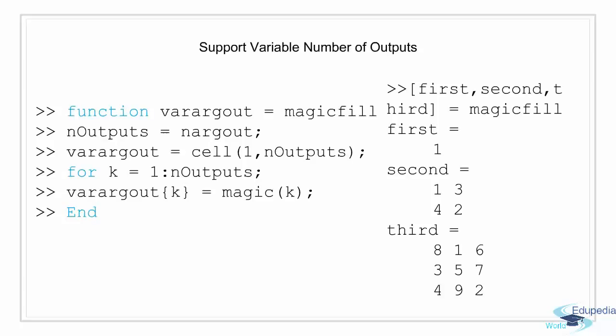Similar to having a variable number of inputs, we can define a function to return a variable number of output arguments using varargout. This is a cell array that contains the function outputs, where each output is in its own cell. The example shown here makes the function assign a magic square to each of the requested outputs. So if one output is requested, it outputs one one-dimensional magic square. If two outputs are requested, it outputs a one-dimensional and a two-dimensional magic square matrix, and so on. For three outputs, it will be a one-dimensional, a two-dimensional, and a three-dimensional square matrix. Using nArgOut, we know how many outputs have been requested, and then we loop and output the magic square to each cell of the varargout cell array.